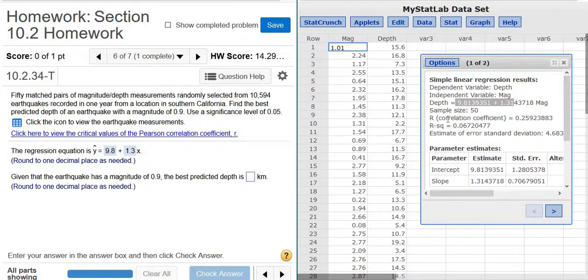So if r is significant, then we're going to use the line to make our prediction. If it's not, we're going to use the mean of the deaths, the mean of the y values. So here's r, 0.259, here's the sample size, it's 50. And alpha is right over here, it's 0.05, that's the level of significance.